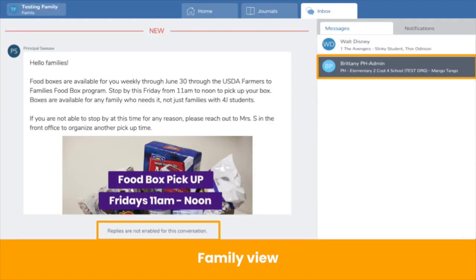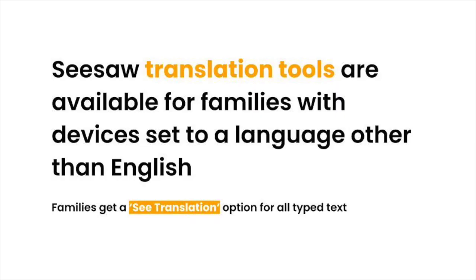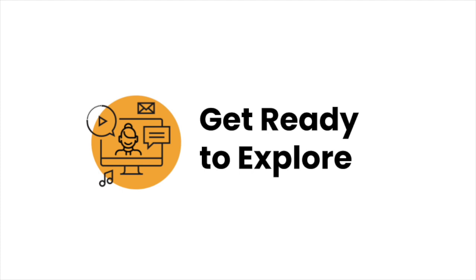Families receive school-wide announcements as a message from the admin who sent it. Replies are disabled here as well. One of the greatest Seesaw tools is translation. When families use devices set to a language other than English, they're able to translate all typed text in Seesaw. This includes the body of your announcement and captions. Seesaw automatically shows the translation option when it's available.